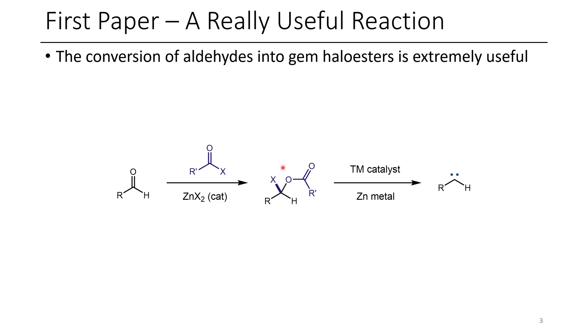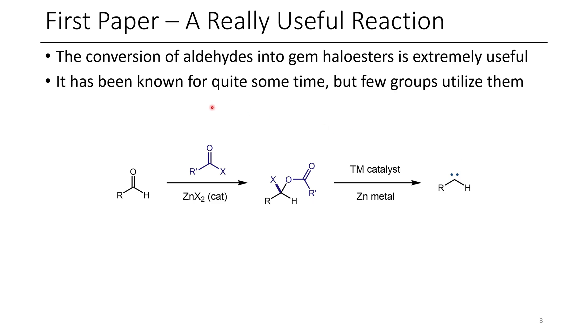Once they form this geminal haloester species, they're able to treat it with various transition metals to get different modes of reactivity as carbenoids. It's also worth noting that this reaction has been known for quite some time, but there's very few groups who utilize it.